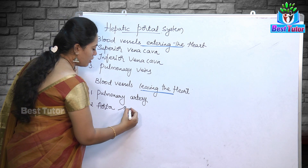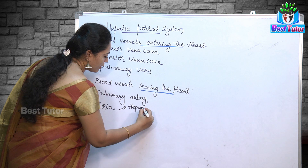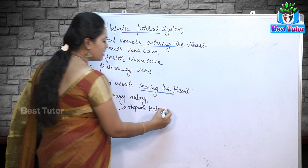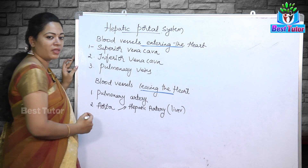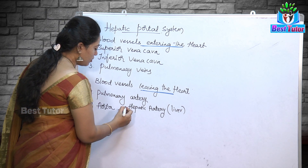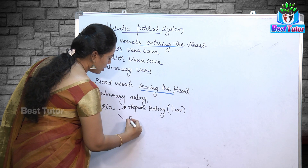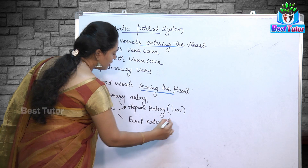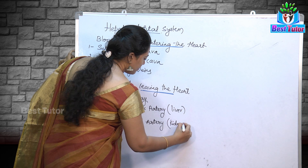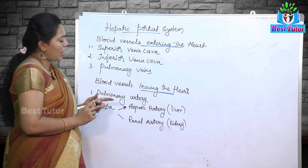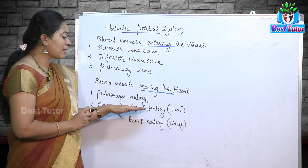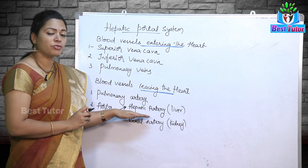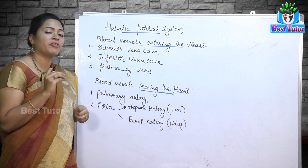One is the hepatic artery. The name itself — hepatic — indicates this is the blood vessel which goes to the liver. We also have something called the renal artery. Renal indicates the organ is kidney. Now, the hepatic artery is the one supplying blood to the liver, but here it is not directly going to the liver. It further branches into blood vessels which go to different parts of our digestive system.